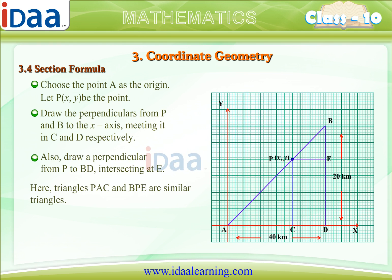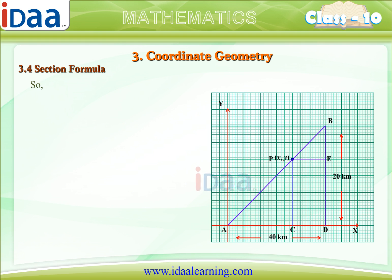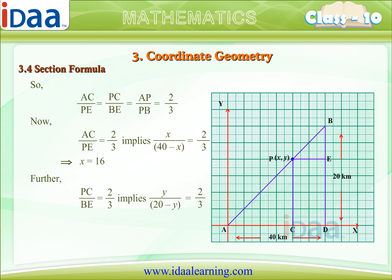Here, triangles PAC and BPE are similar triangles. Thus, the position of relay tower is at P(16,8).